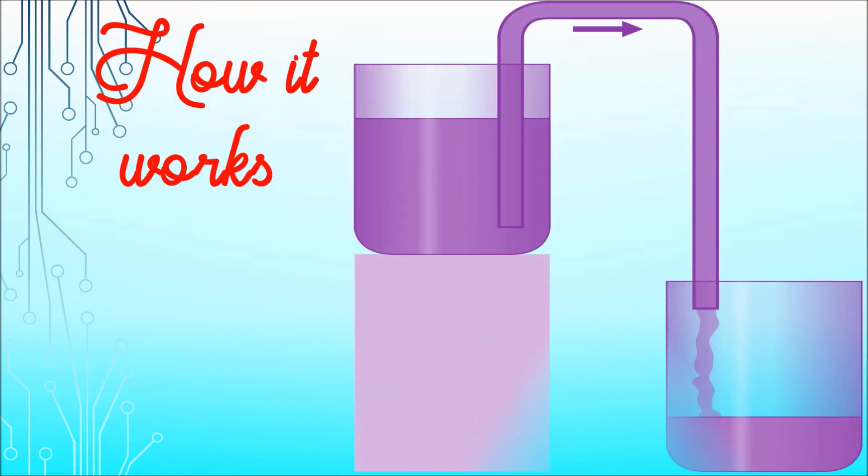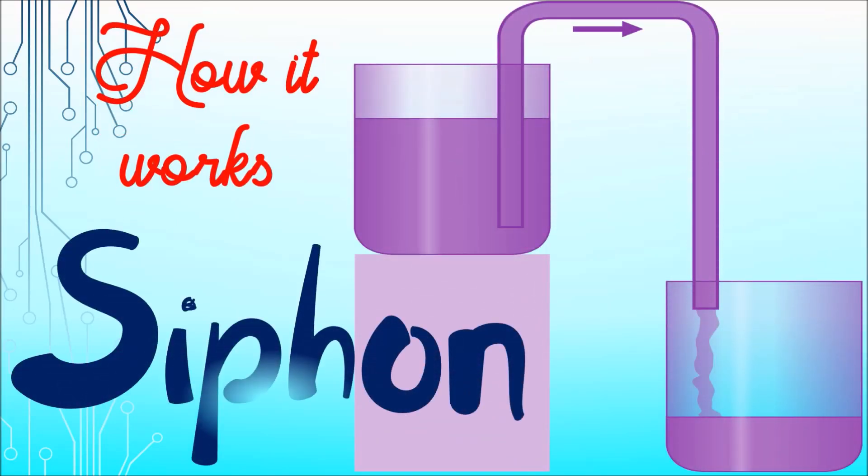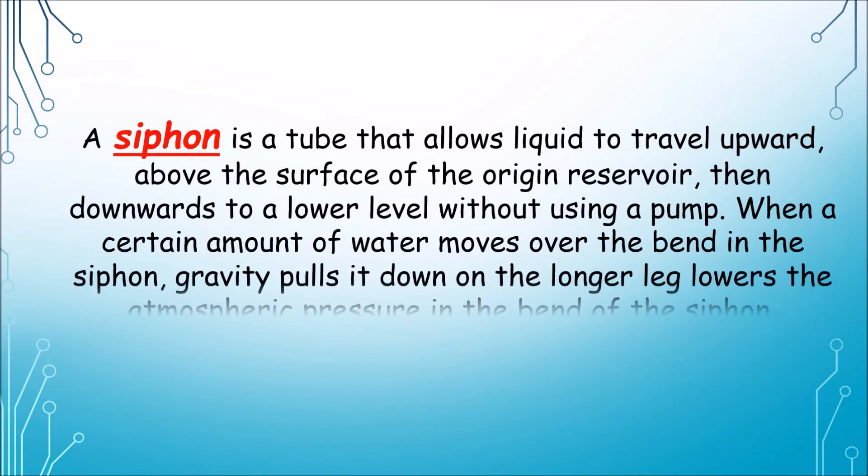Today we're going to demonstrate how a siphon works. A siphon is a tube that allows liquid to travel upward above the surface of the origin reservoir, then downwards to a lower level without using a pump. When a certain amount of water moves over the bend in the siphon, gravity pulls it down on the longer leg, lowering the atmospheric pressure in the bend of the siphon.